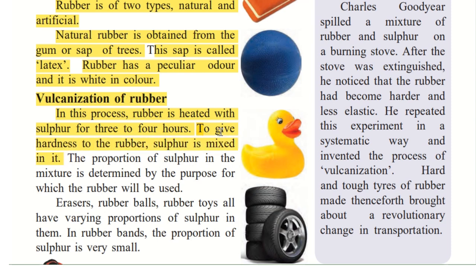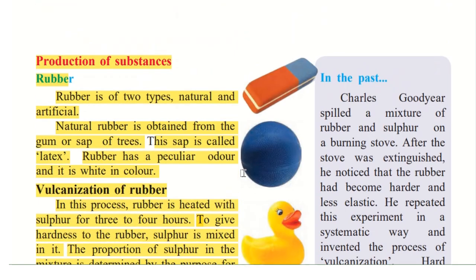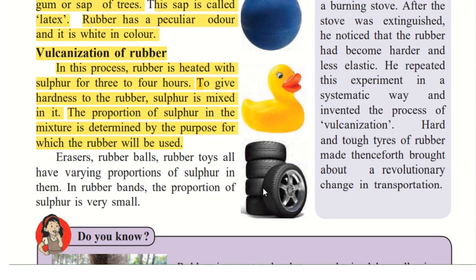So why is sulphur used? To make that soft, liquid rubber into a hard substance. The proportion of sulphur — that is how much sulphur is to be added in the mixture — is determined by the purpose for which the rubber will be used. Whether we want it to make a soft toy or to make hard tyres, accordingly sulphur is added.